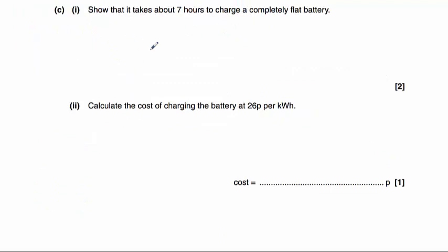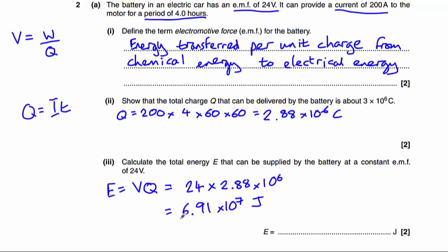Part C asked us to show that it takes about 7 hours to charge a completely flat battery. Now it's time to consider what we know here. We know that the total energy stored in the battery is 6.91 times 10 to the 7 joules.